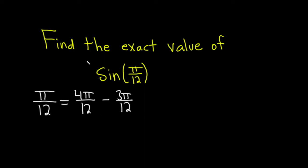And this is really convenient because we actually know what these angles are. 4 goes into 12 three times, so this is actually going to be pi over 3. And 3 goes into 12 four times, so this is actually going to be pi over 4.